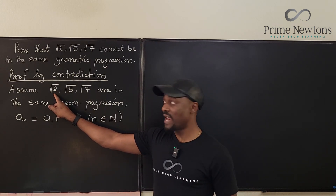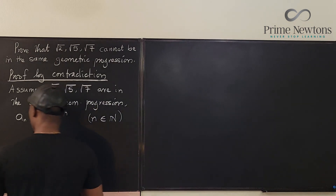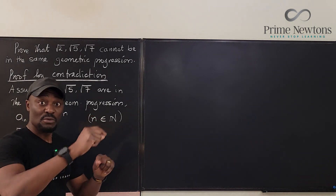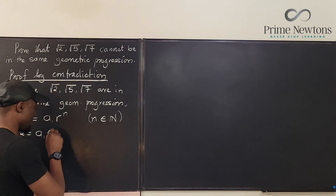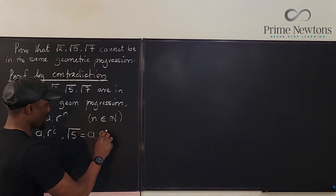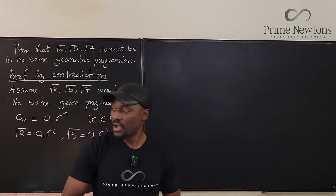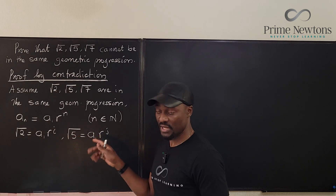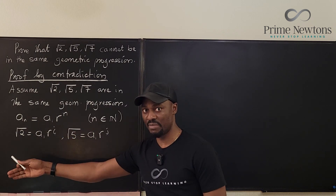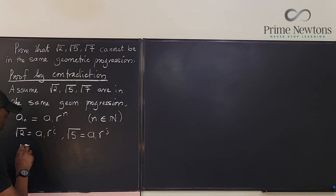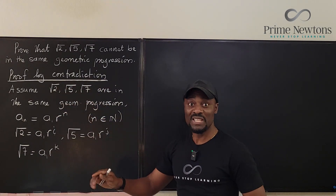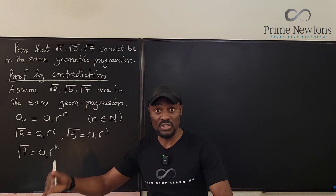So we're going to try writing each of our three numbers this way. The square root of 2 can be written as a₁·r^i, the square root of 5 as a₁·r^j, and the square root of 7 as a₁·r^k, where i, j, k are natural numbers with i < j < k, since the numbers are increasing and the positions are changing. We're not saying they're consecutive — they're just somewhere in the sequence.